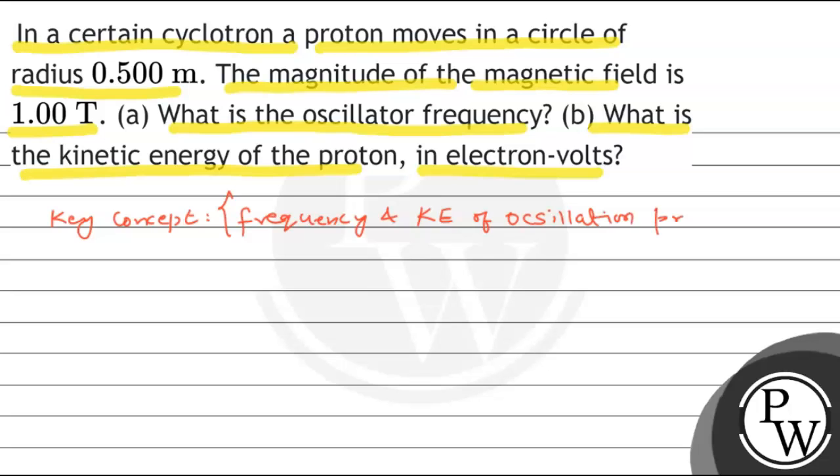First, we'll solve part (a). We know that frequency f equals one over the time period T, and T equals 2πm/(qB). Therefore, the frequency of oscillation is f = qB/(2πm).